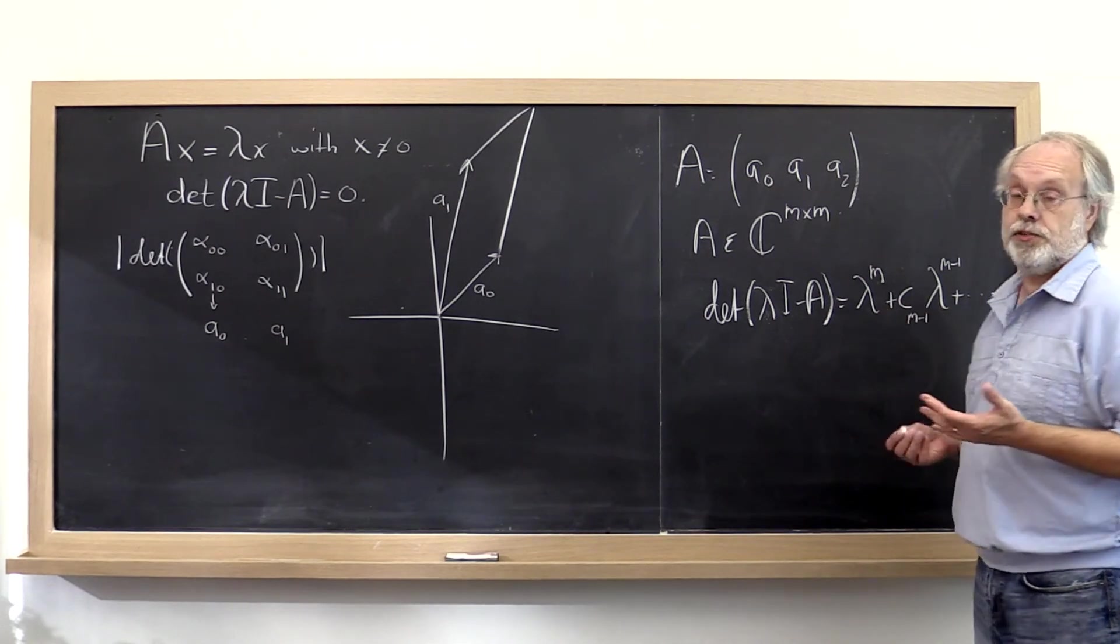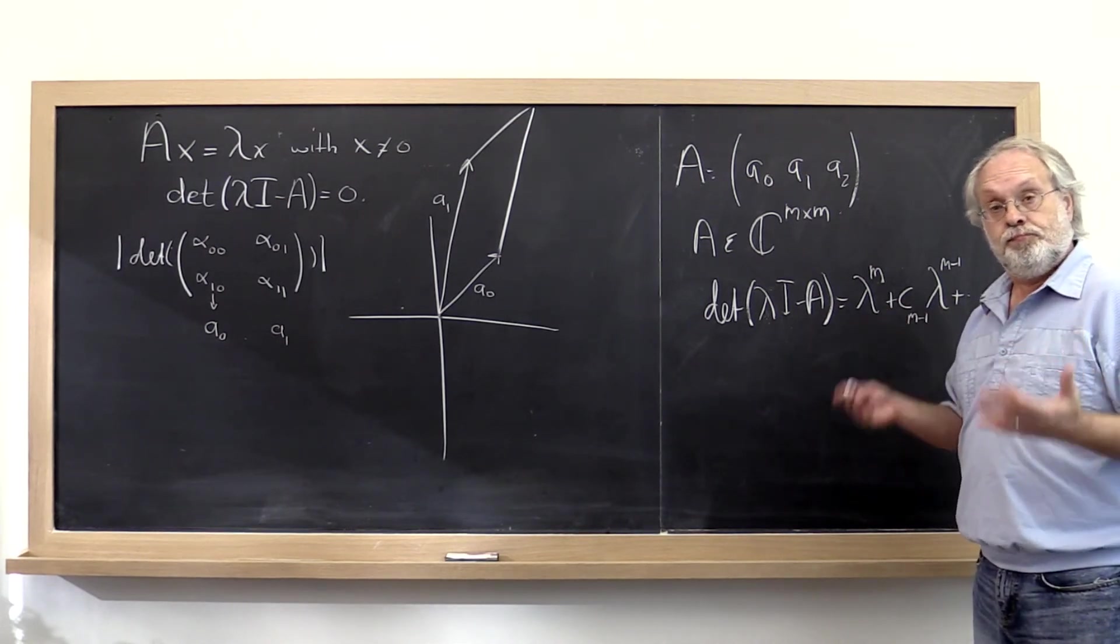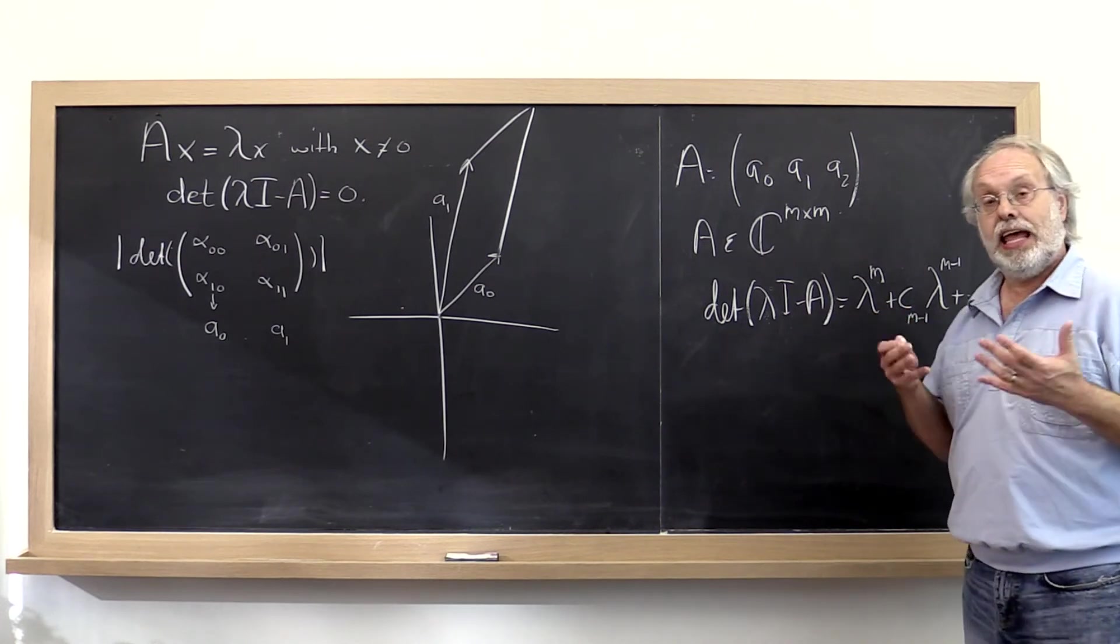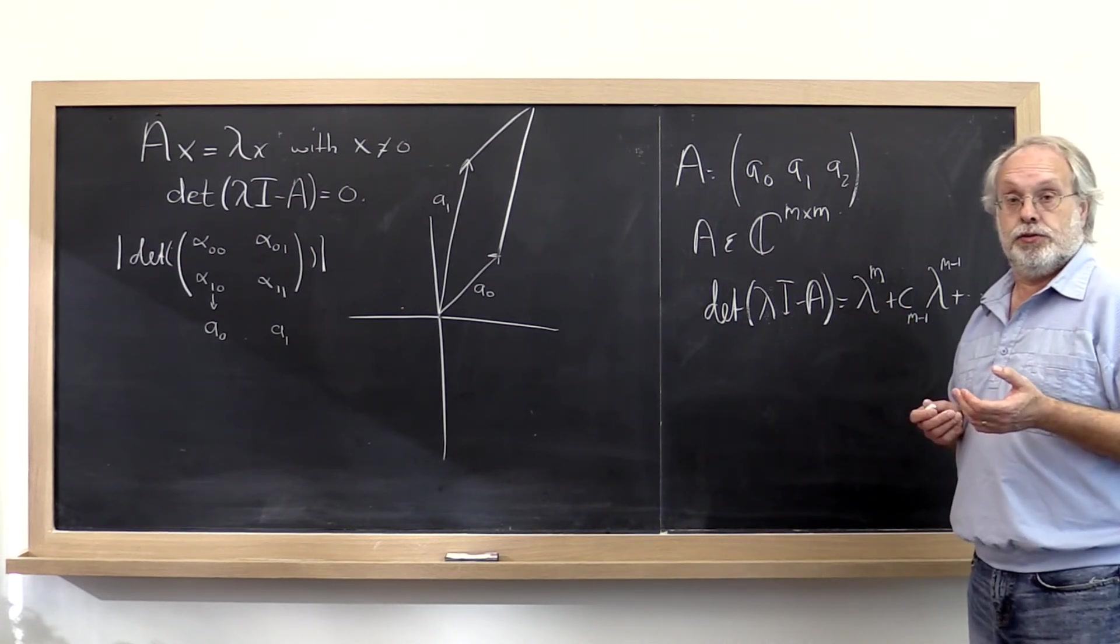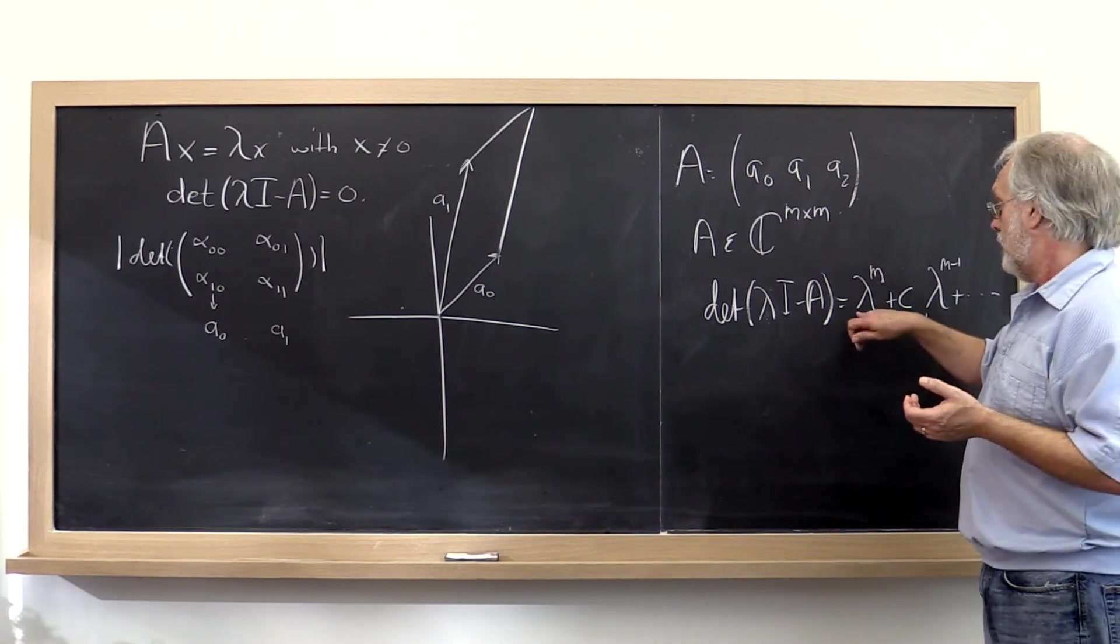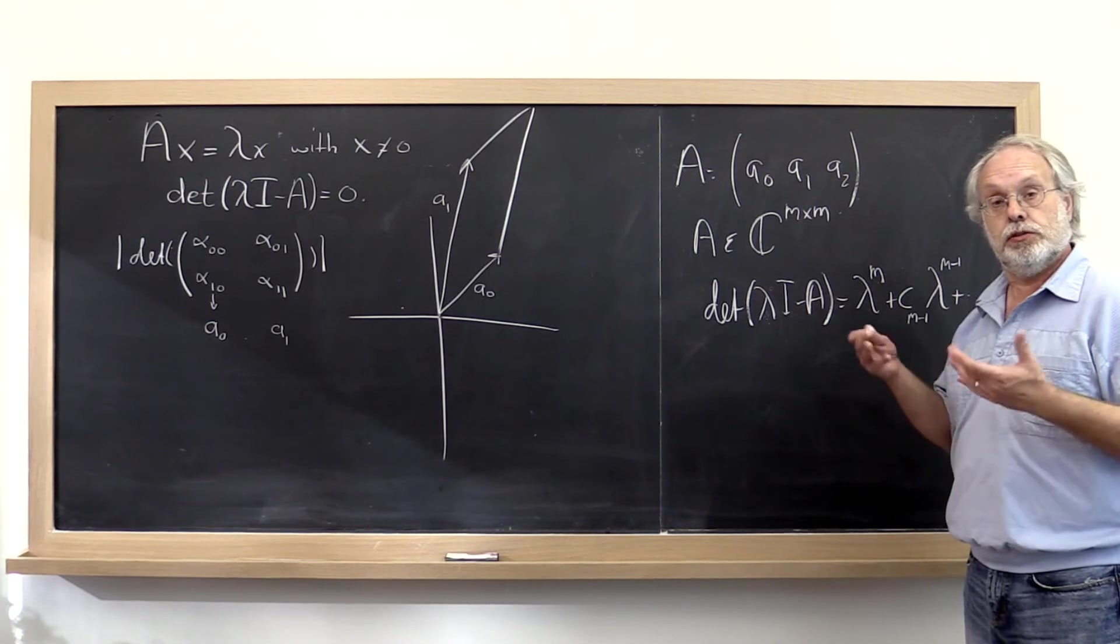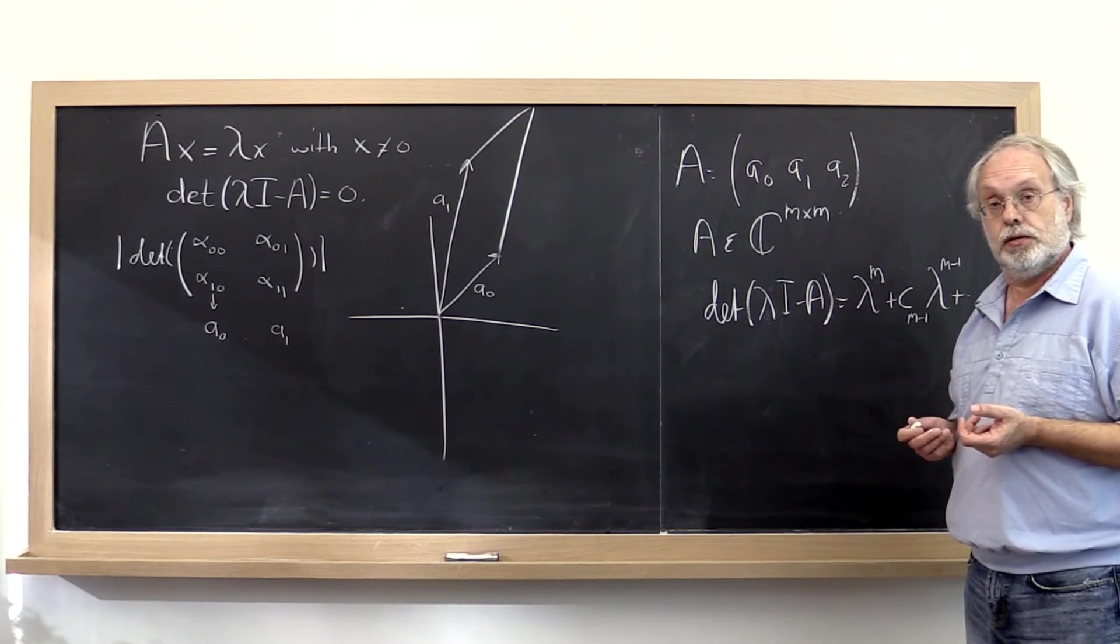It also tells us that our matrix A has at most m distinct eigenvalues. Why? Because an mth degree polynomial has at most m distinct roots.